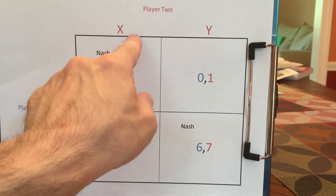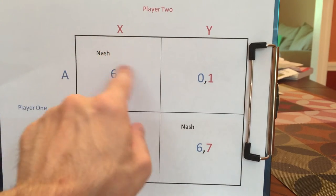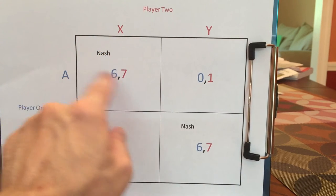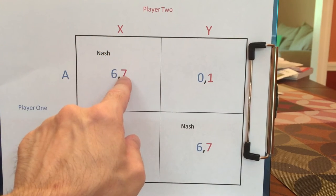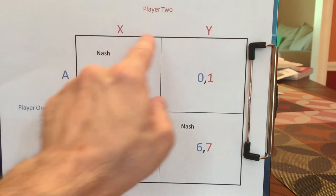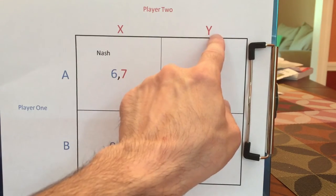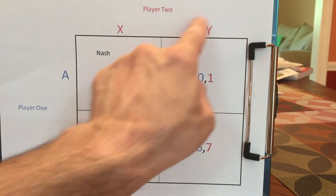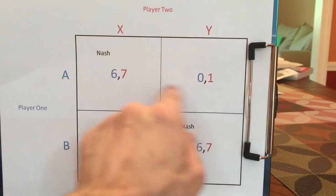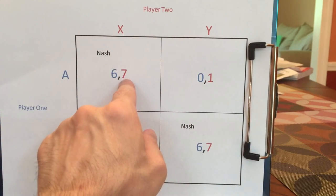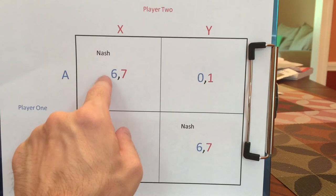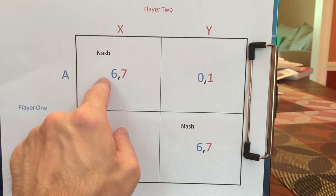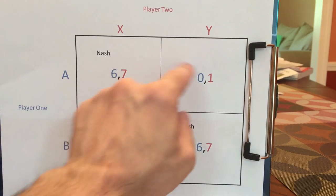Player two would say: I played X and because he played A, I ended up getting seven. But had I done something different, given that he played A, I would have gotten one. So I don't regret. So neither party will regret if they end up at AX.